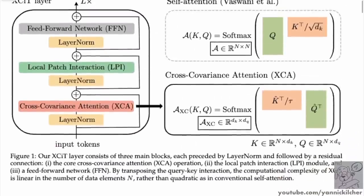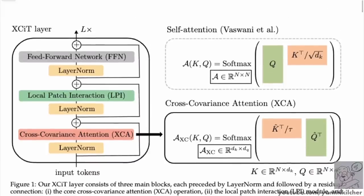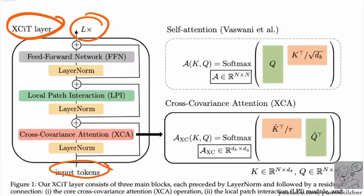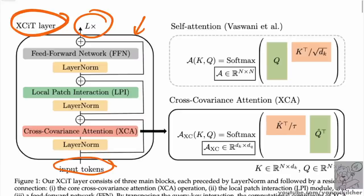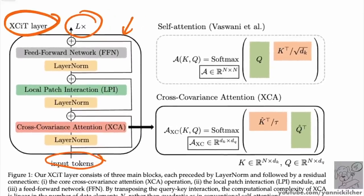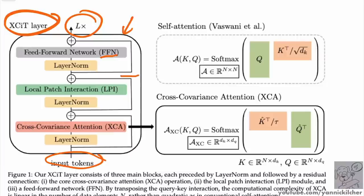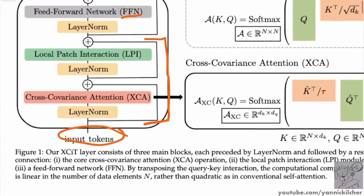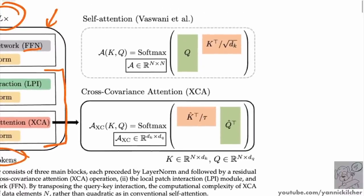The main graphic in the paper shows on the left how the whole model consists of XCiT layers. You have input tokens at the bottom, then L of these XCiT blocks, and at the end a classification or segmentation layer. Within each block, the self-attention has been replaced by two blocks: the bottom one is the cross-covariance attention, followed by a feed-forward network.